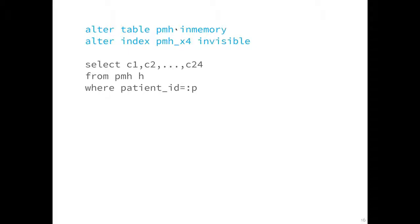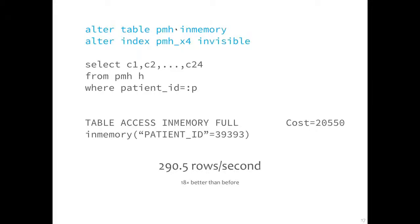A little thinking led us to believe we needed to make the index on patient ID invisible to force the in-memory magic to take place. When we did, we got table access in-memory full — the CBO thought it had a much higher cost, which is why it hadn't chosen this plan when the index was present. But instead of 16.4 rows per second, we got almost 300 rows per second — 18 times better than when using the index scan off the row-based buffer cache.